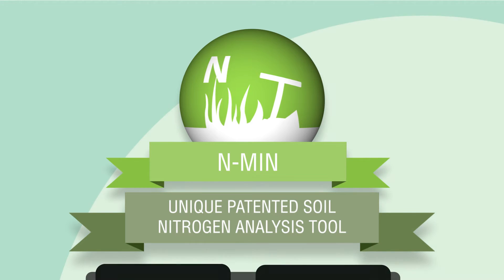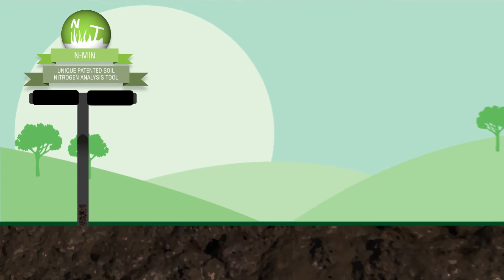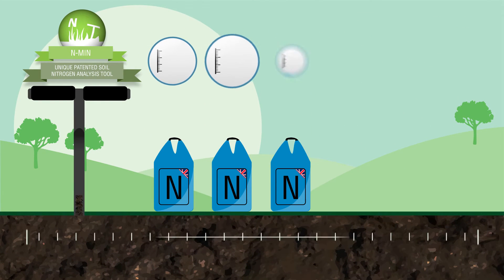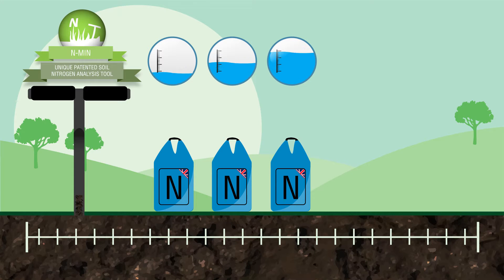NMIN measures not only the amount of nitrogen currently present in soil, but also the amount of nitrogen that will become available to the crop between spring and harvest, letting you know exactly how much or how little you need to invest for the coming year.